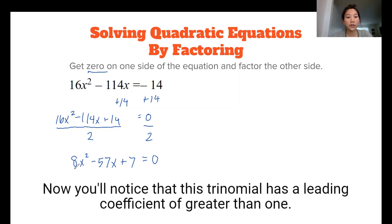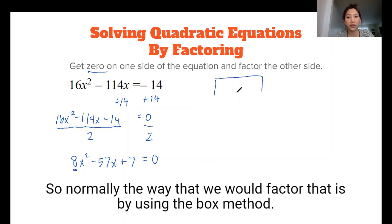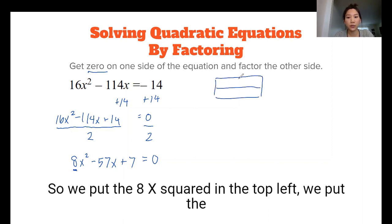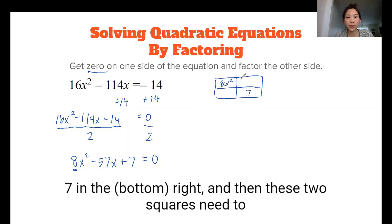Now you'll notice that this trinomial has a leading coefficient of greater than one. So normally the way that we would factor that is by using the box method. So we put the 8x² in the top left, we put the 7 in the top right, and then these two squares need to add up to that negative 57x.